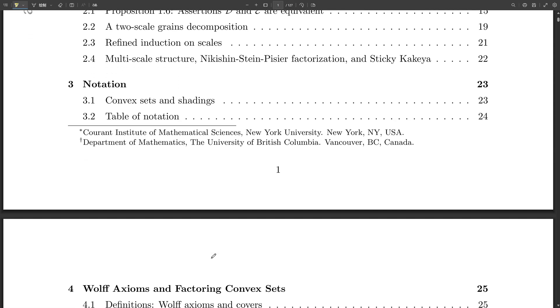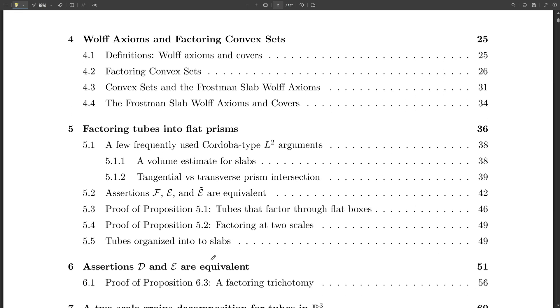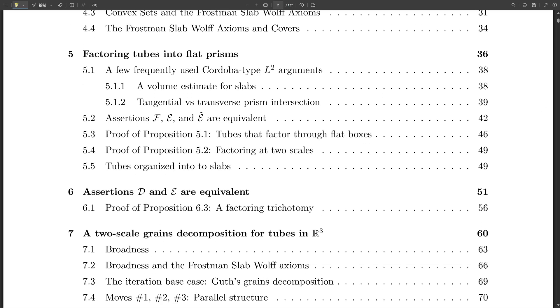So they're basically fine-tuning the arrangement of those grains to make sure that broadness condition holds at every level. Precisely. And that's super important because it lets them use assertions D and E effectively at every step of that inductive argument. It's like they're building the scaffolding for their proof. Okay. So those moves aren't just some random tricks. They're carefully designed to work together with assertions D and E to make that whole inductive process possible. Exactly. It's a beautiful example of how different mathematical ideas can work together to solve a problem. But the ingenuity of this paper doesn't stop there. Remember tube doubling? Oh yeah, that one sounded pretty interesting. Kind of like a side quest in the middle of this epic proof. It might seem like a detour, but it actually reveals something really cool about the connections between different mathematical ideas.